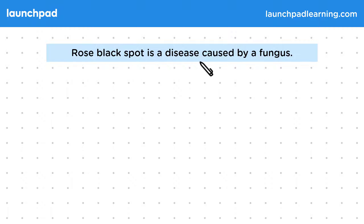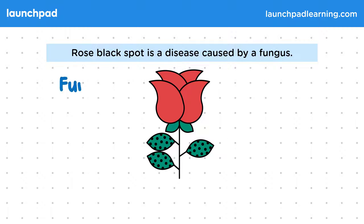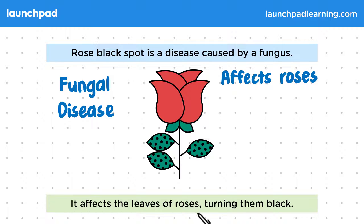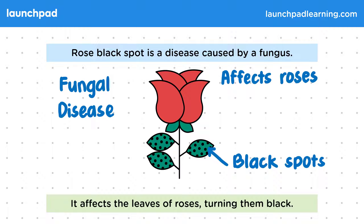Rose black spot is a disease caused by a fungus. Rose plants can become infected with this fungus, and it affects the leaves of roses, turning them black. When roses are infected with black spot, they develop black spots on their leaves. For the exam, you need to be aware that rose black spot is a fungal disease that causes purple or black spots to develop on leaves.